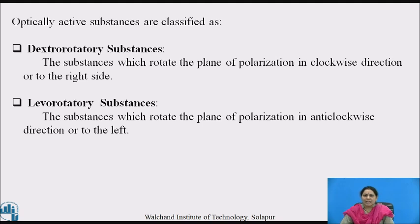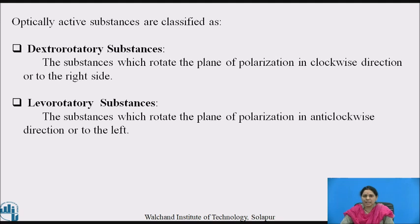Optically active substances are classified into two types: dextrorotatory and levorotatory. In dextrorotatory, the substance rotates the plane of polarization in the clockwise direction, or to the right. In levorotatory, the substance rotates the plane of polarization in the anticlockwise direction, or to the left.